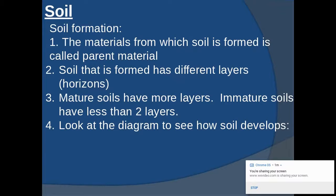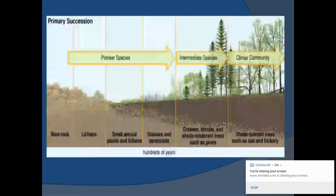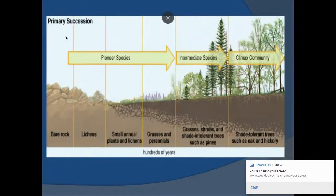Soil formation. The materials from which soil is formed is called the parent material. Soil that's formed has different layers and horizons. Immature soils have less than two layers. Look at the diagram to see how soil develops. You have bare rock. This is something called succession happening over time. Then you have lichens come in. Then small annual plants that start to break down the rock even more - root action, biological activity. Then grasses, then shrubs and shade tolerant trees, eventually a climax community. You can see the soil is getting deeper each time. The time frame is hundreds of years.